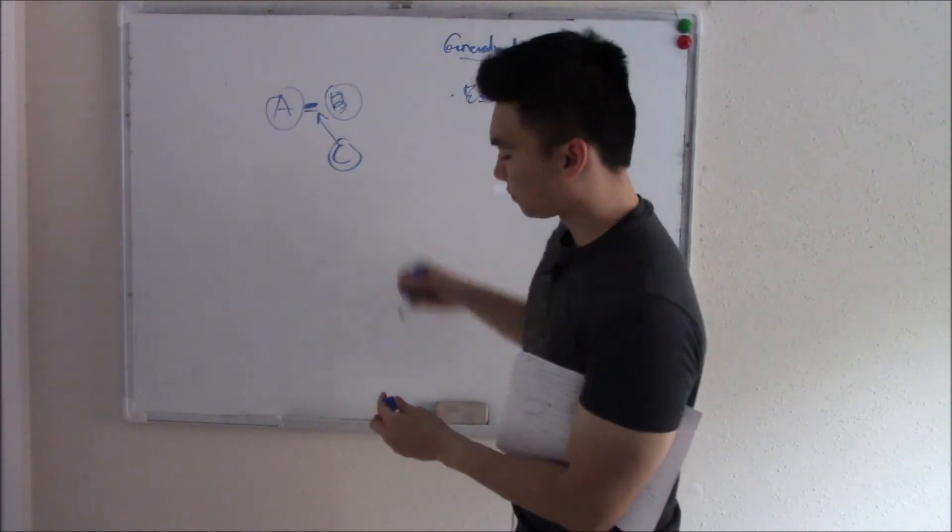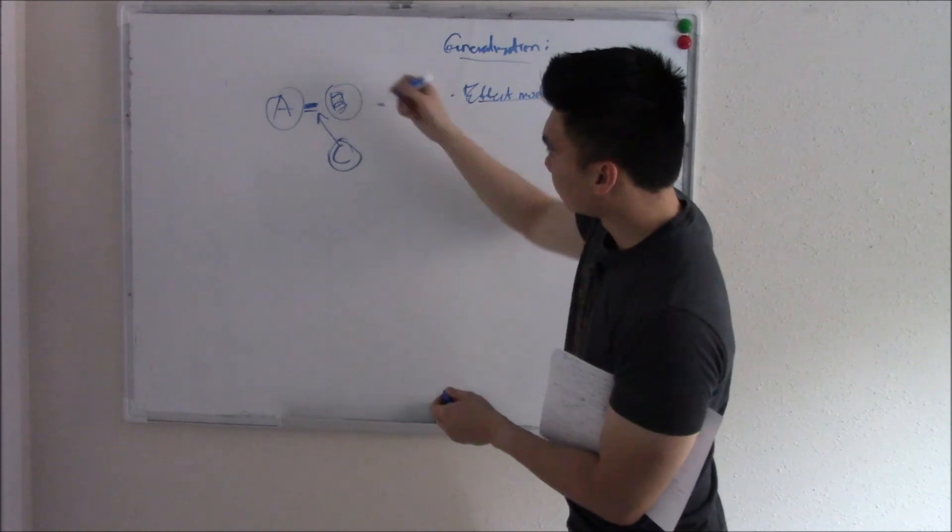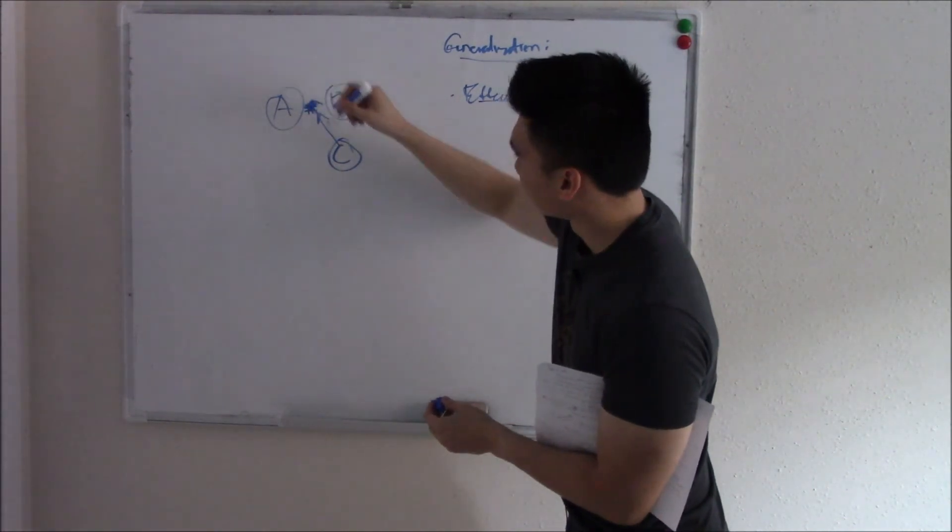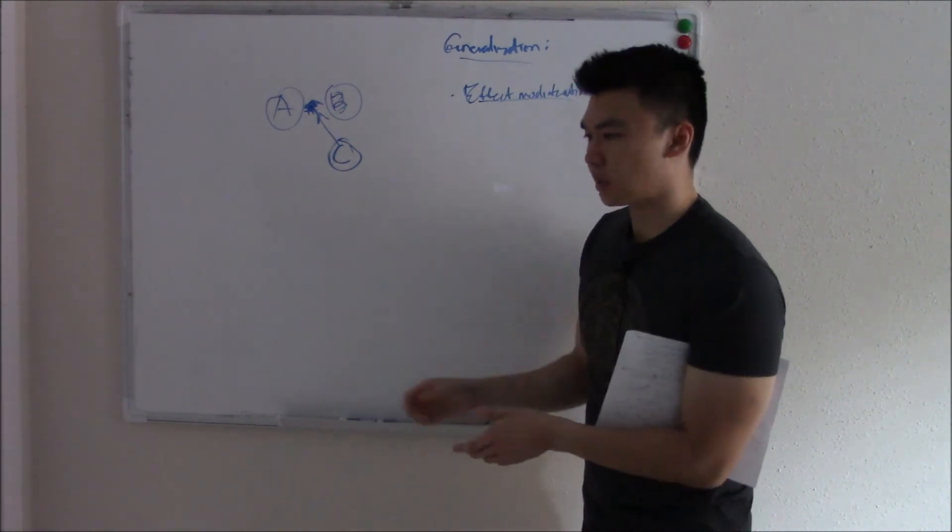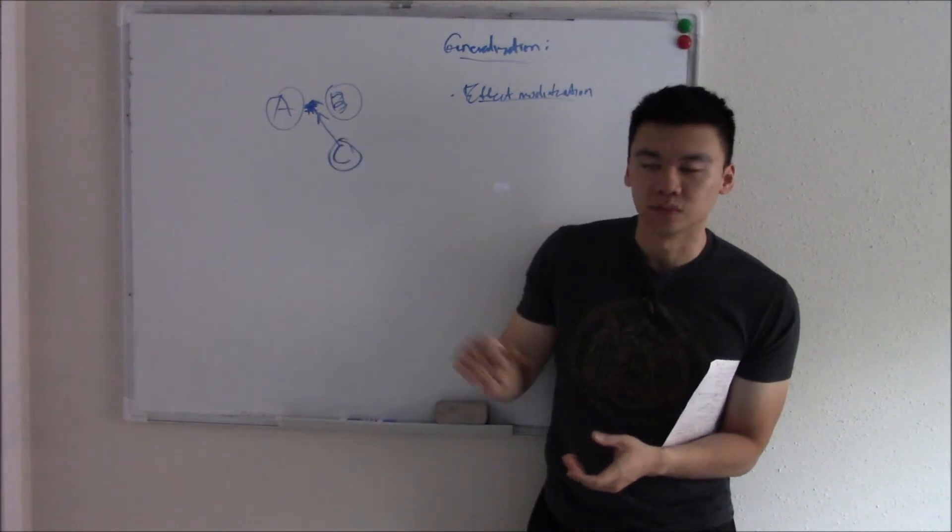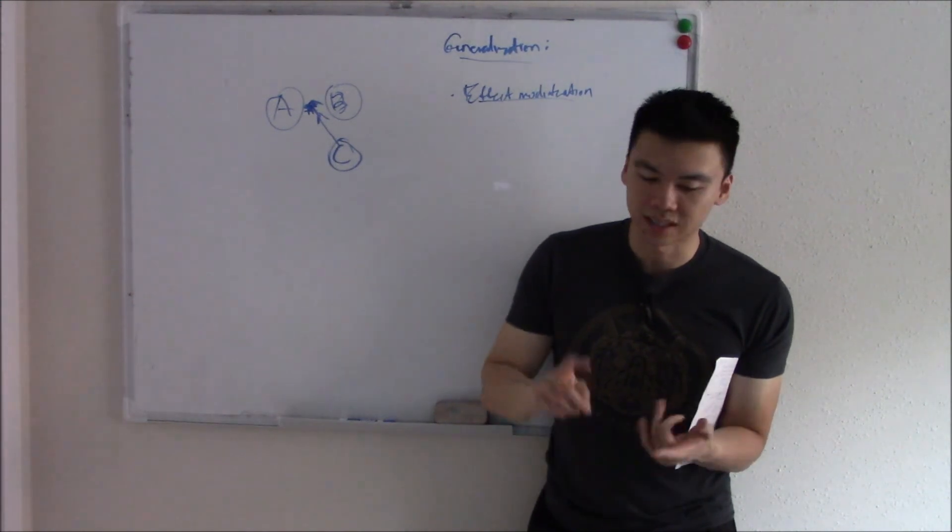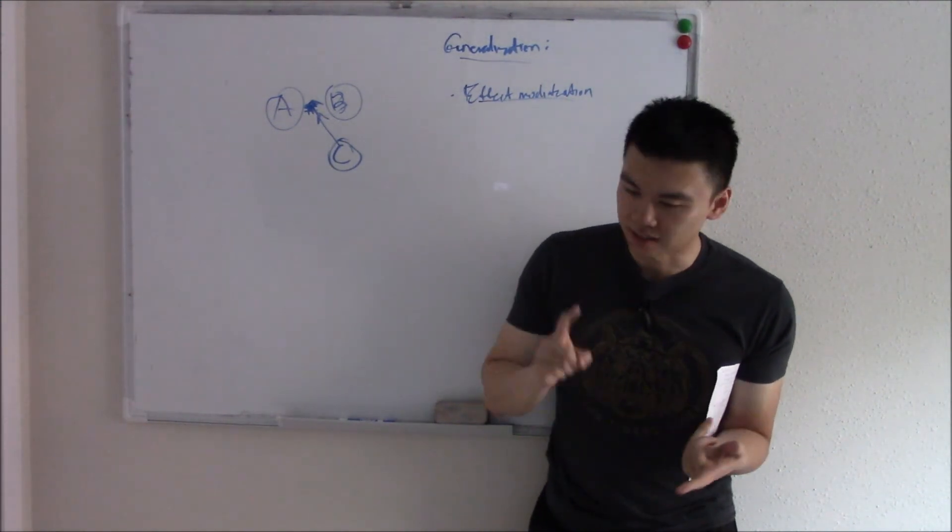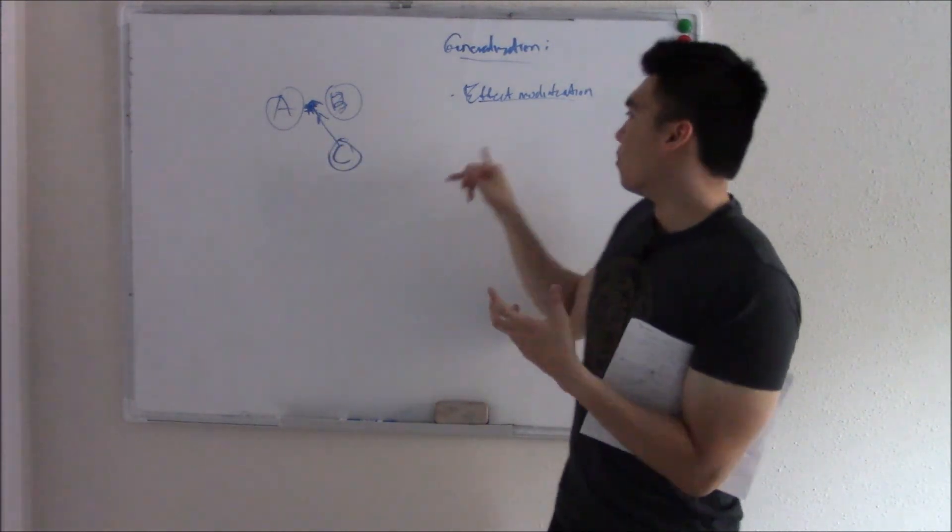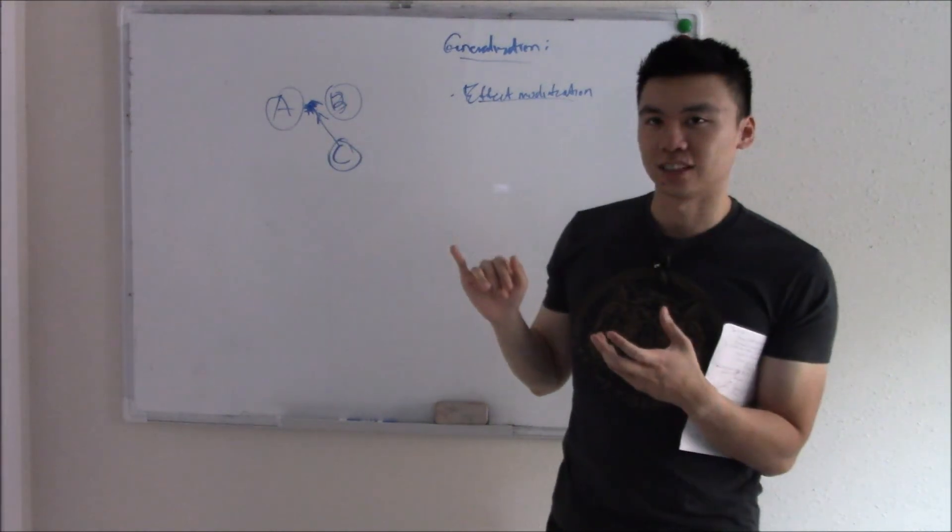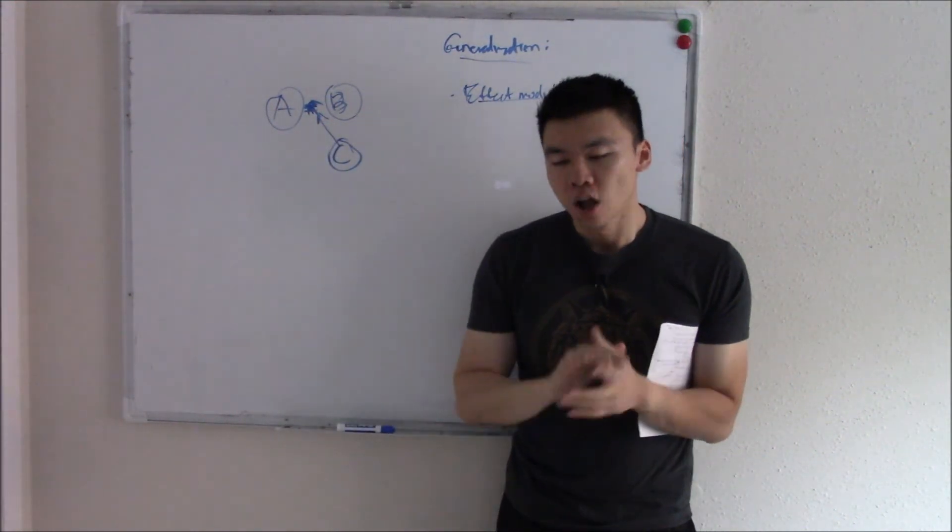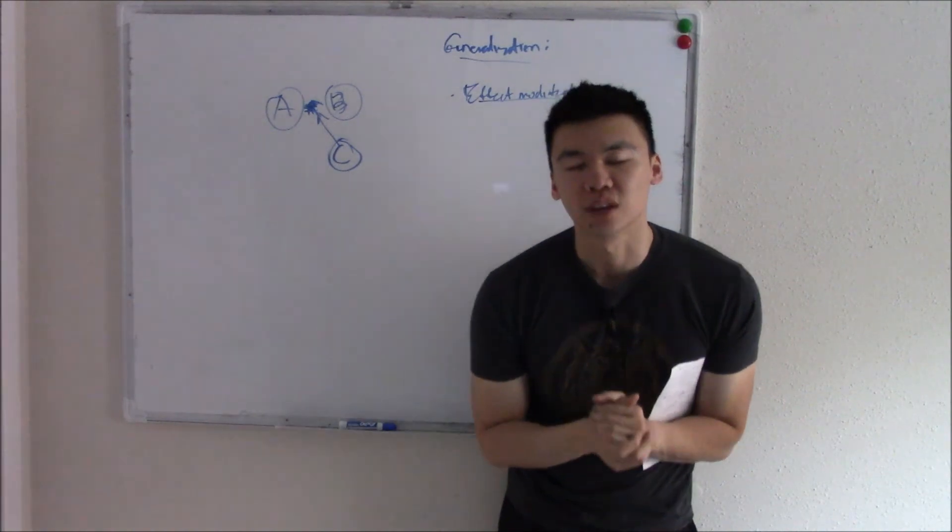If you have asbestos exposure, but it doesn't change the relationship. No matter if you're smoking or you're not smoking, asbestos causes cancer. Doesn't change the relationship. It just modifies the effect. If it changed the relationship, then it's no longer effect modification, then it's a confounding bias. Hope that clarified some things. Hope you enjoyed the video. Thanks.